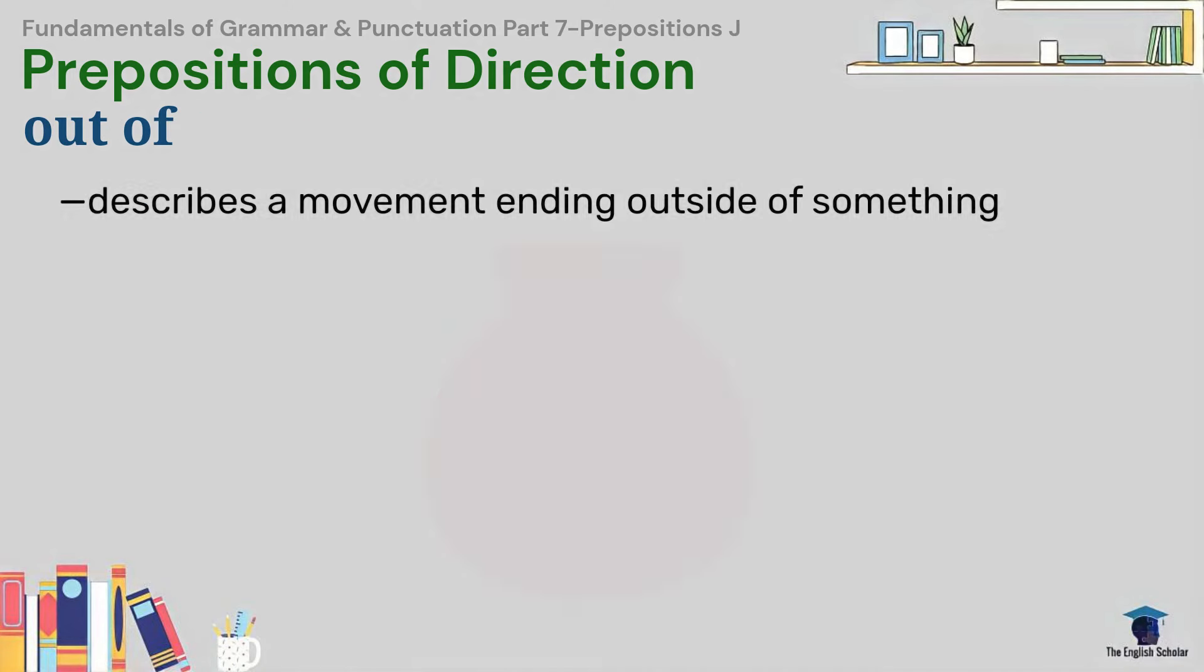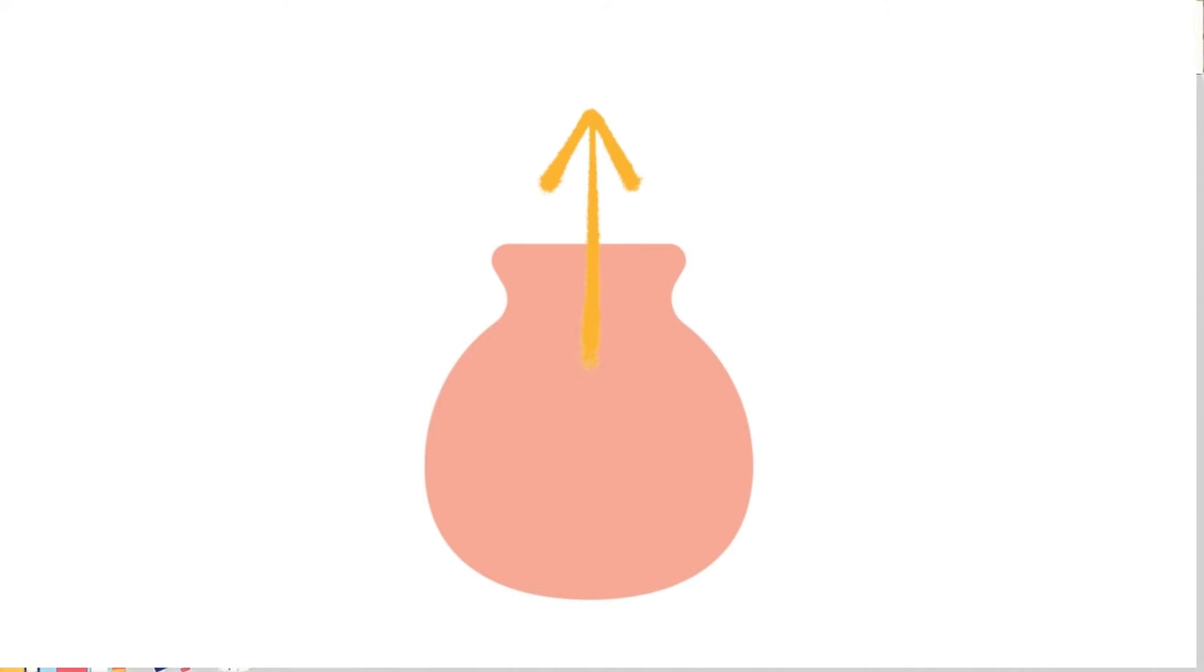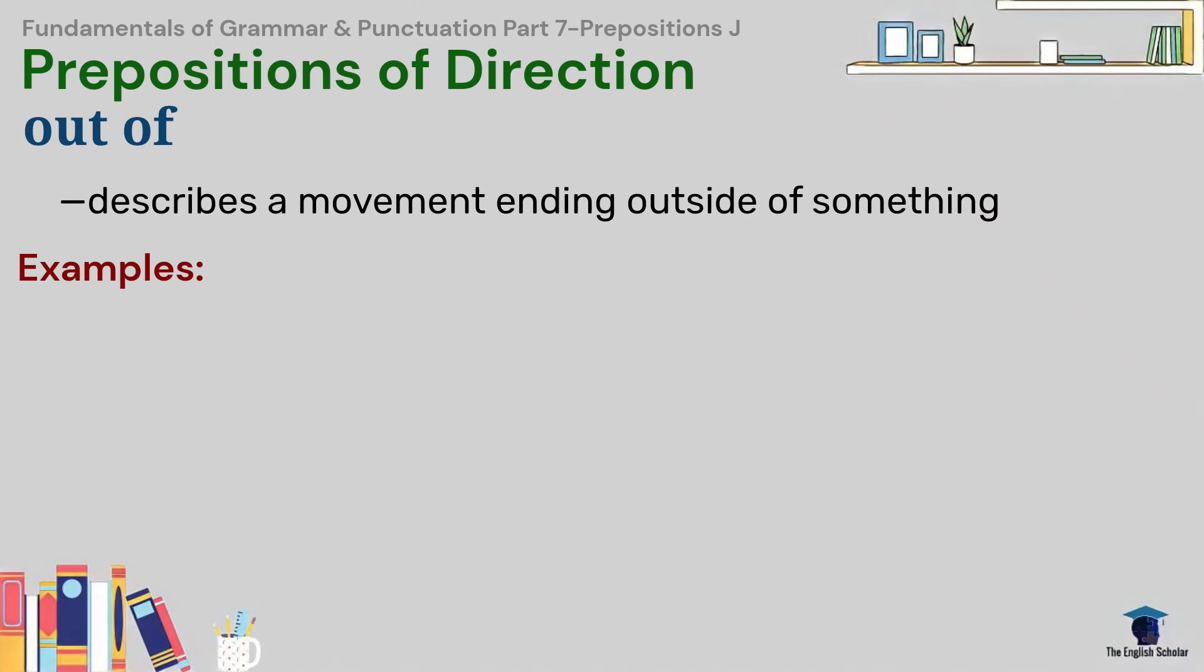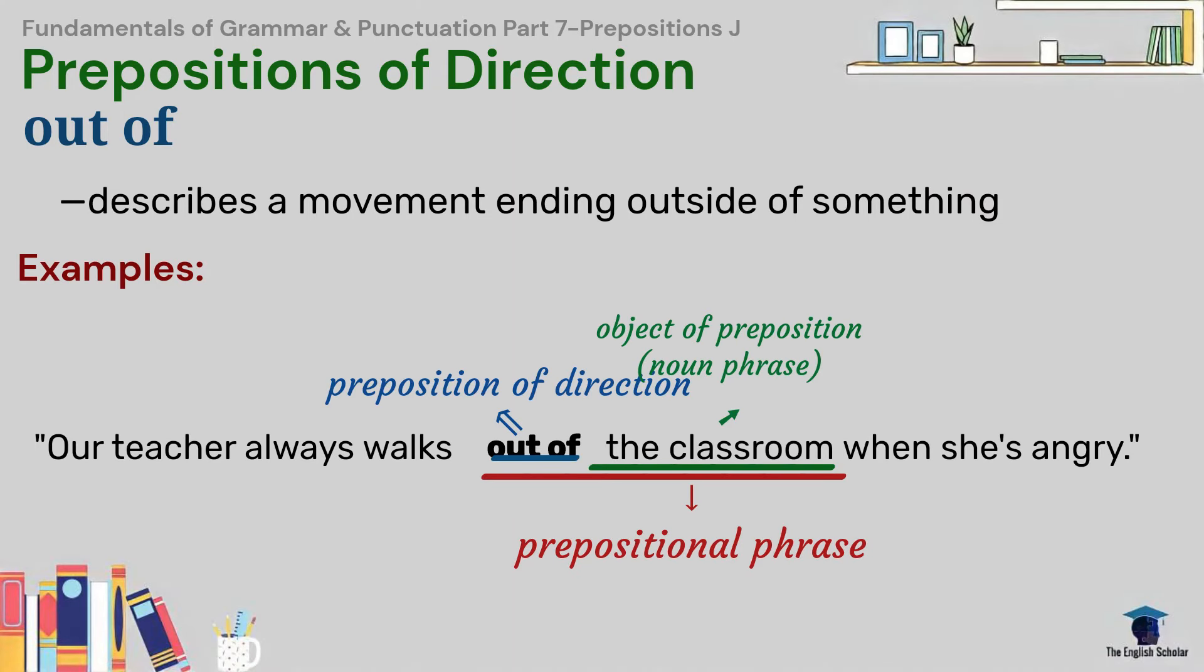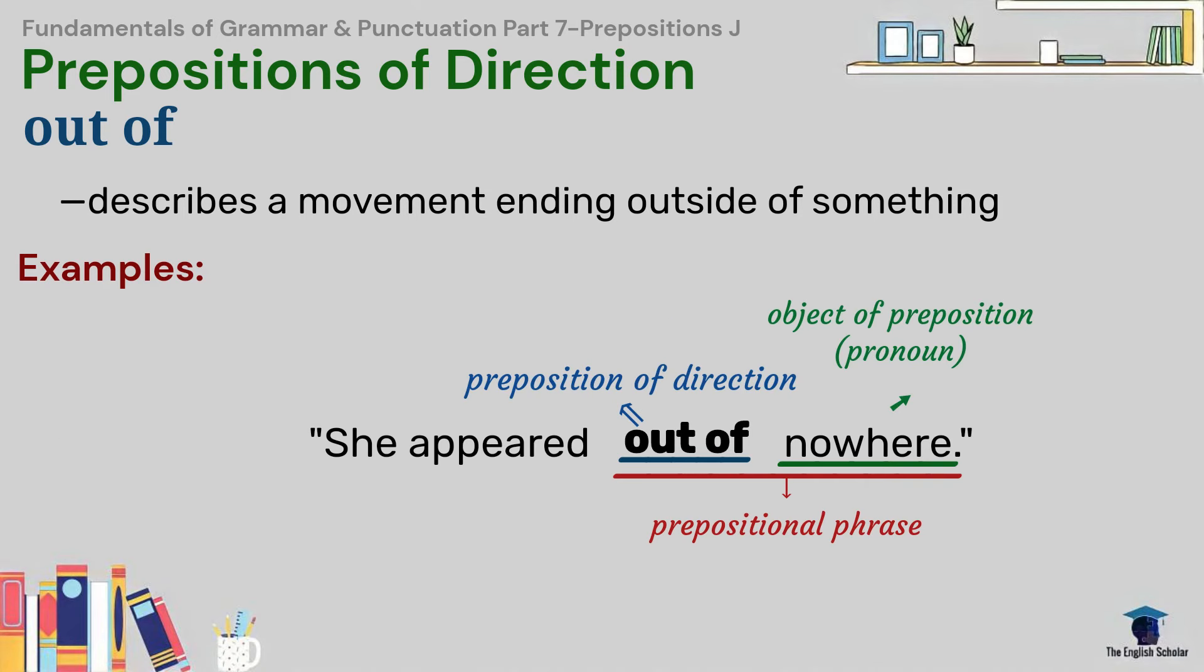Out of describes a movement ending outside of something. For example, our teacher always walks out of the classroom when she is angry. She appeared out of nowhere.